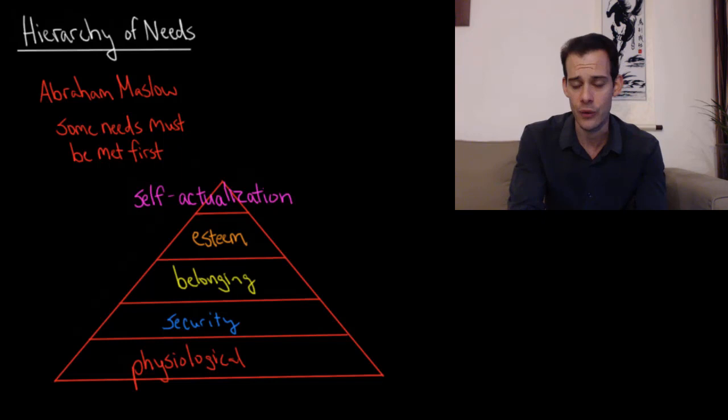Maslow thought that we could group motivations together into categories and then we could put those categories into a hierarchy, so this is often referred to as Maslow's hierarchy of needs. And the basic idea is that certain categories of needs must be met first and then you can move on to the next category.